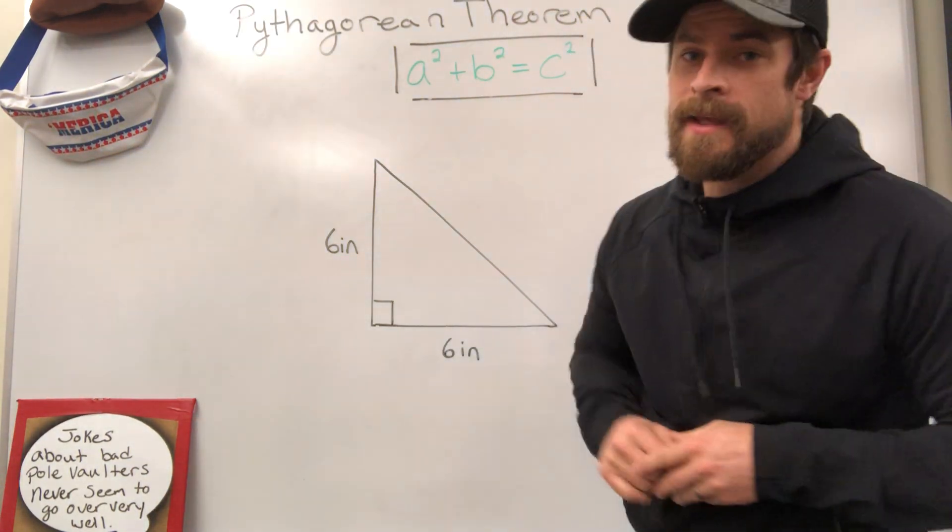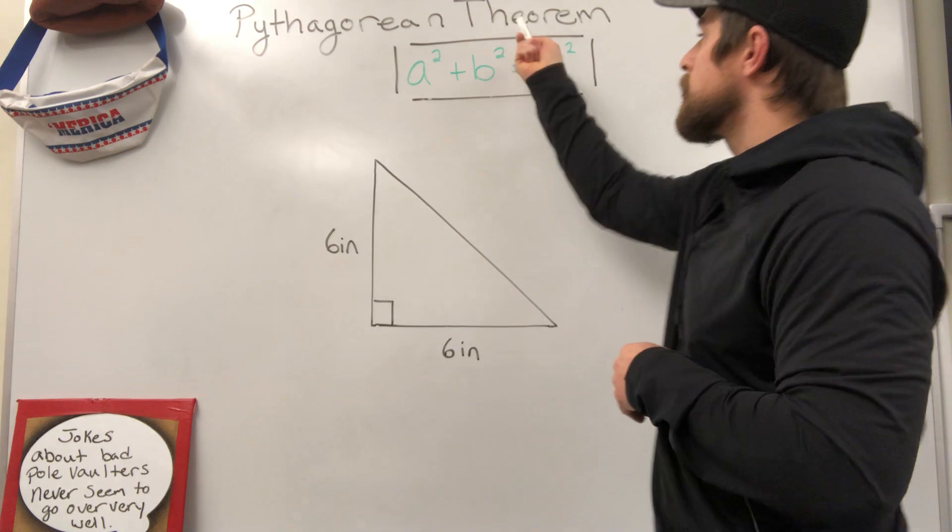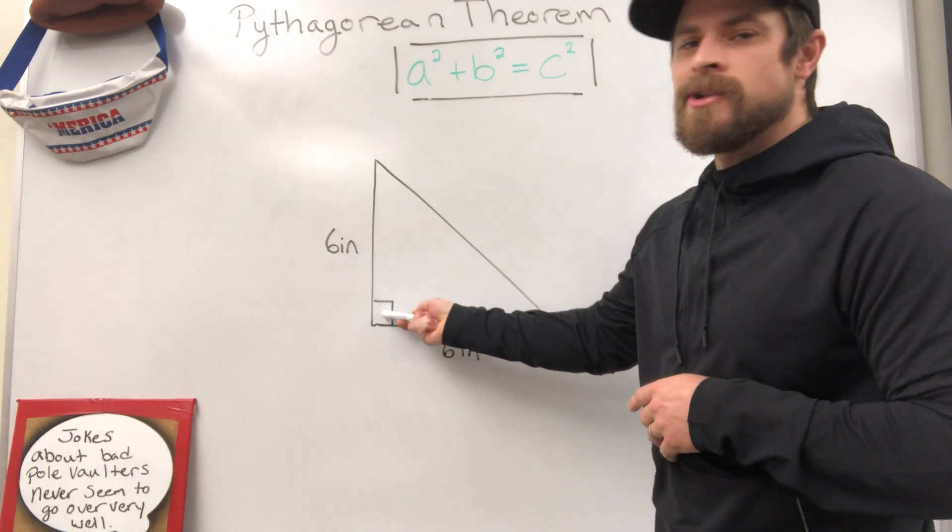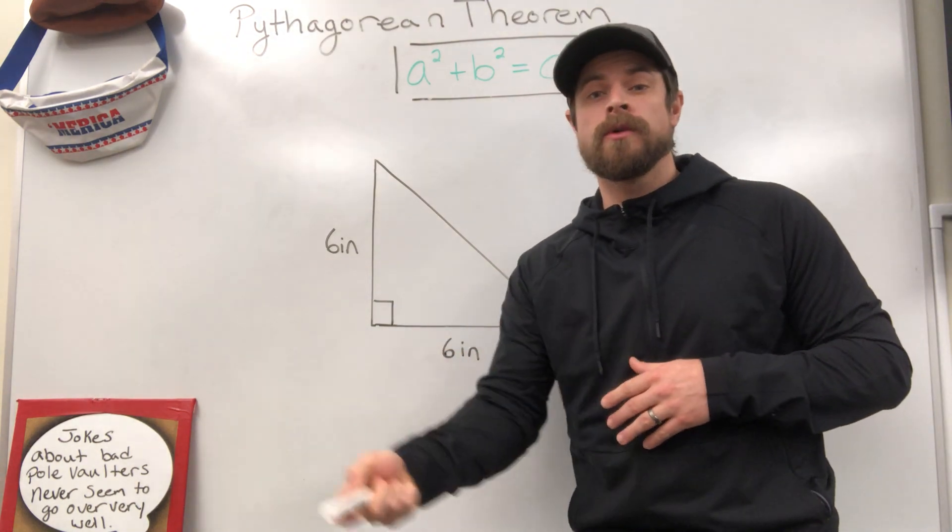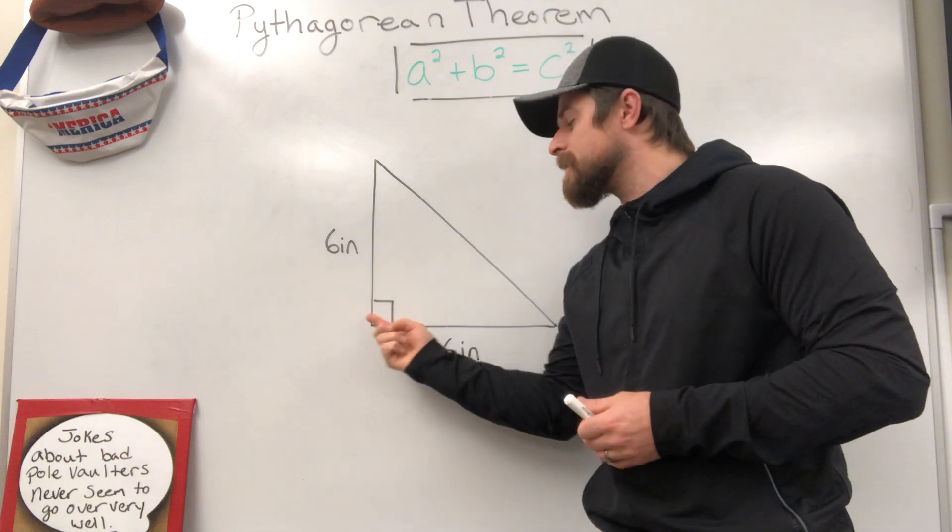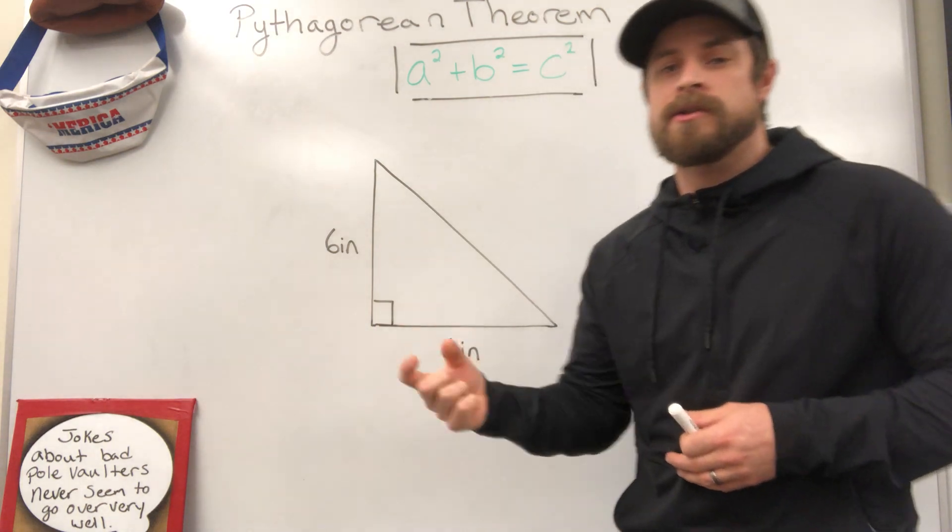All right, you tuned into a good one today. We're going to be learning the Pythagorean Theorem dealing with a right triangle. Remember, the Pythagorean Theorem only works with right triangles, so you must have a 90-degree angle in that triangle for this to work.